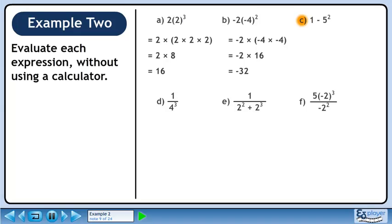In Part C, we'll calculate 1 minus 5 squared. 5 squared is the same as 5 times 5. This gives us 1 minus 25. The answer is minus 24.